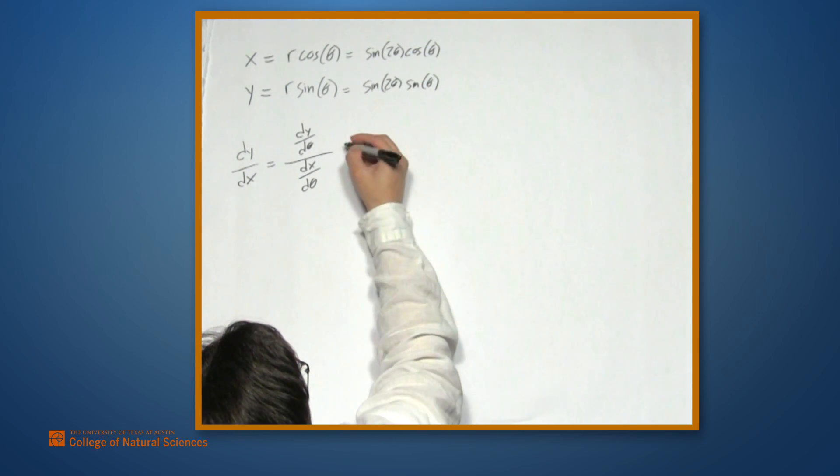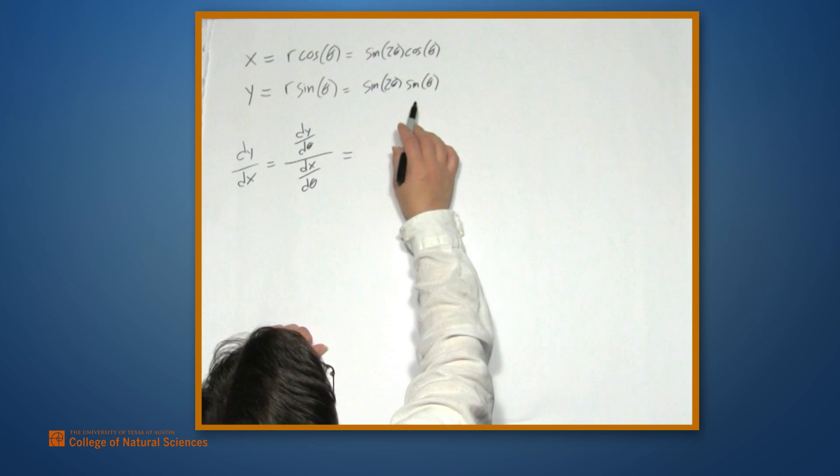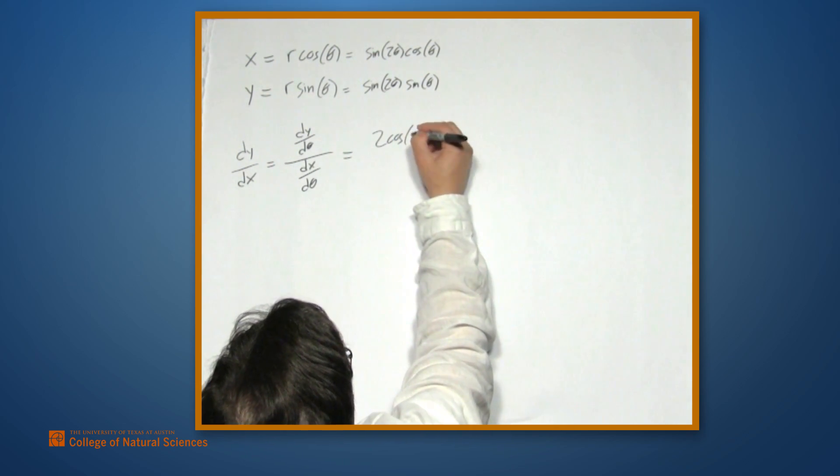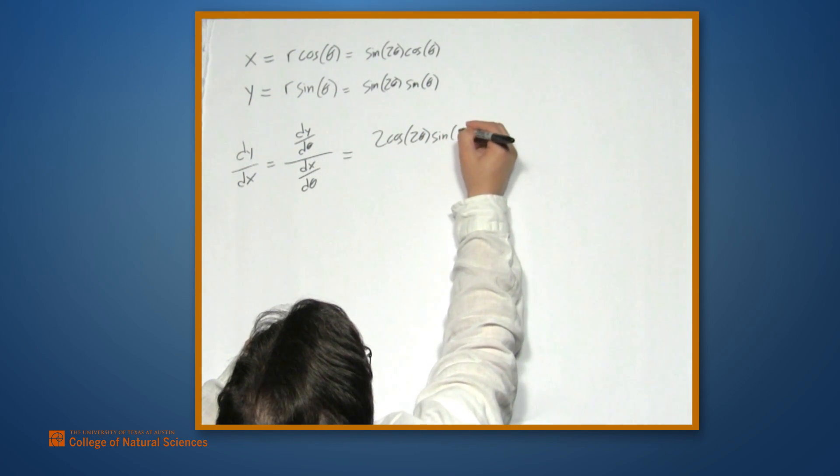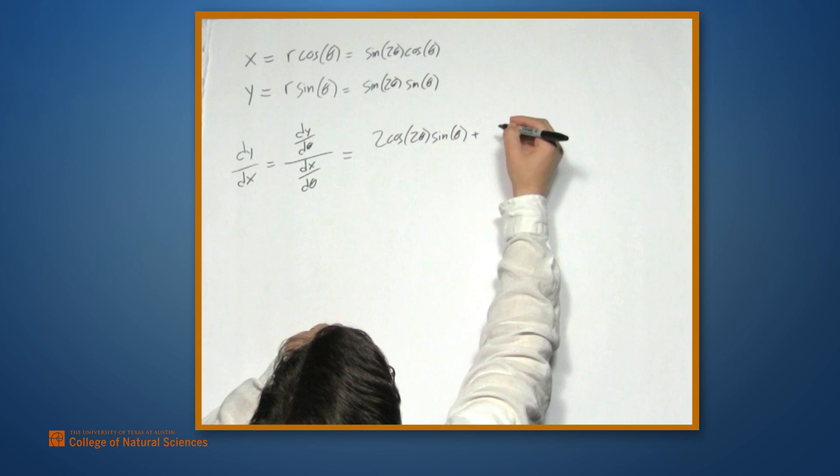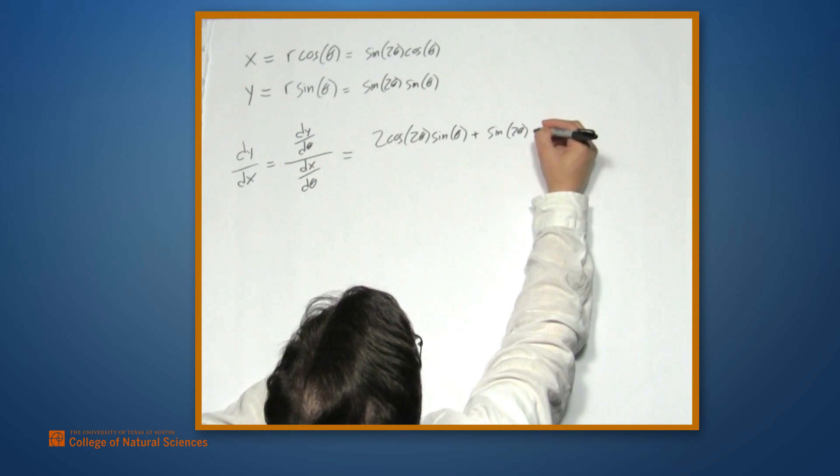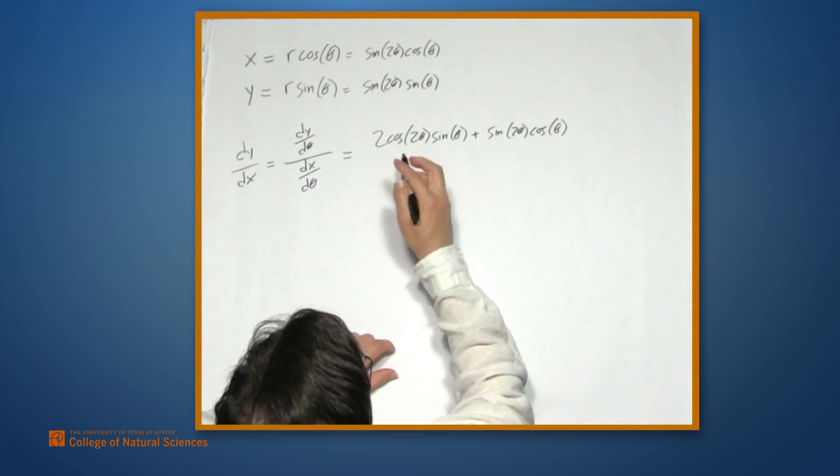Both of these we can find now with these equations. If we differentiate y with respect to theta, we get 2 cosine 2 theta times sine of theta plus sine of 2 theta times cosine of theta. We just use the product rule here.